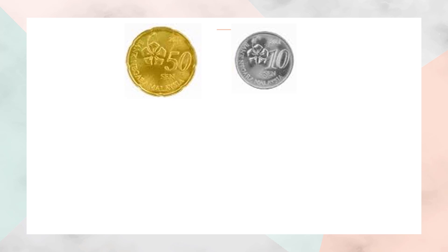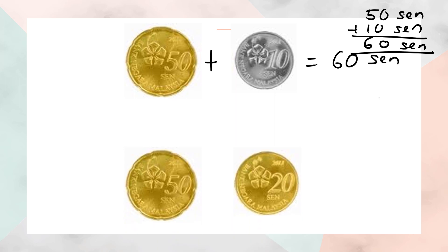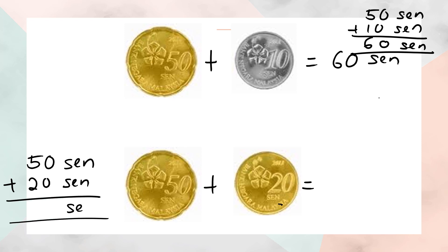50 cent plus 10 cent — zero plus zero is zero, five plus one is six, so you will get 60 cent. And 50 cent plus 20 cent — zero plus zero is zero, five plus two is seven, so you will get 70 cent.